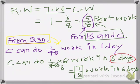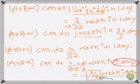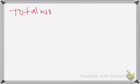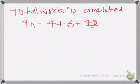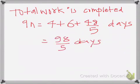So the total work is completed in 4 days (A, B, C together) plus 48/5 days (B and C together) plus 6 days (C alone), which equals 98/5 days total. I hope you understood. Please don't forget to subscribe for more videos. Thank you for watching, see you in the next video.